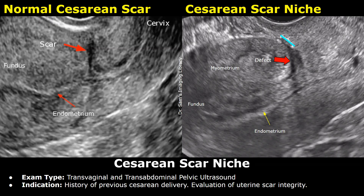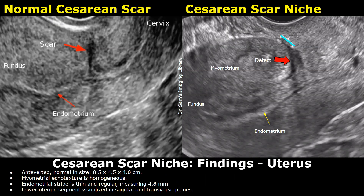Here is another example report of a cesarean scar niche. Exam type: transvaginal and transabdominal pelvic ultrasound. Indication: history of previous cesarean delivery, evaluation of uterine scar integrity. Findings of the uterus: anteverted, normal in size. Myometrial ecotexture is homogeneous. Endometrial stripe is thin and regular, measuring 4.8 mm. Lower uterine segment visualized in sagittal and transverse planes.